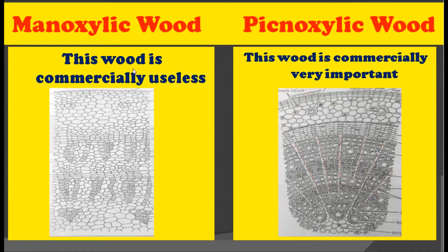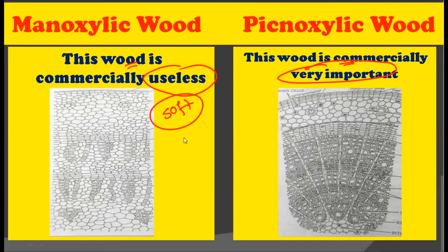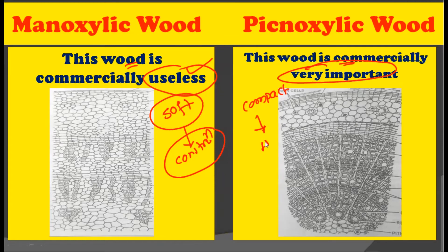The next difference is that Manoxylic wood is commercially useless, while Pachyxylic wood is commercially very important. As seen previously, Manoxylic wood does not contain compact cells and is a very soft type of wood, so it does not have any application in construction — making it commercially useless. Pachyxylic wood, due to its compact and hard nature, becomes commercially very important, as it can be used in construction and other purposes.